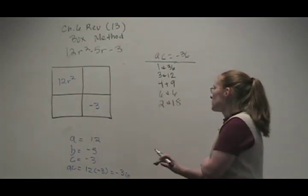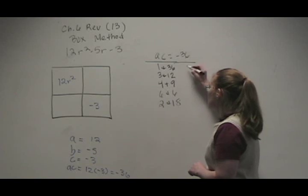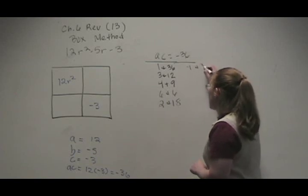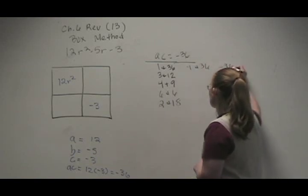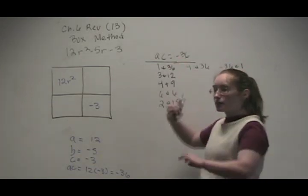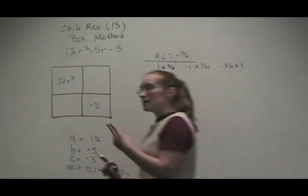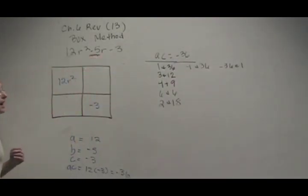6 and 6 to be our last one. So these are all these. Now, what we want to look, these of course, this one here can be negative 1 and positive 36, or it can be negative 36 and positive 1, because we want a negative product. So we need one of each. Now, of these sets, we are looking for the one that's going to give us our middle term, this negative 5.